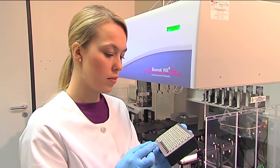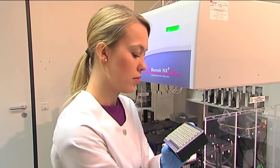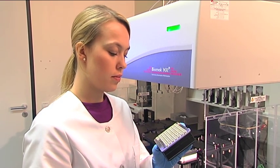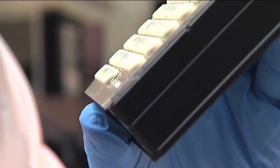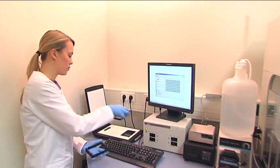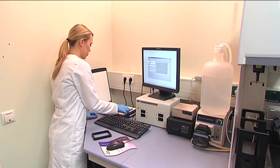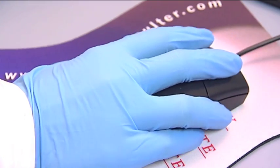The ear tissue samples are checked in the laboratory and sorted into sample racks. The individual samples are then identified by special software and the sample racks are marked with a barcode.